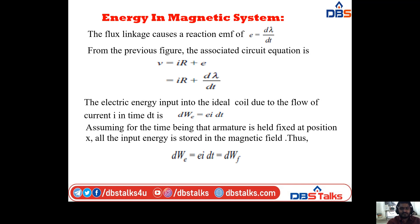The flux linkage causes a reaction EMF of e = dλ/dt. From the figure, the circuit equation is V = IR + e = IR + dλ/dt. The electric energy input into the ideal coil due to the flow of current I in time dt — assuming for the time being that the armature is held at fixed position x — means all the input energy is stored in the magnetic field.